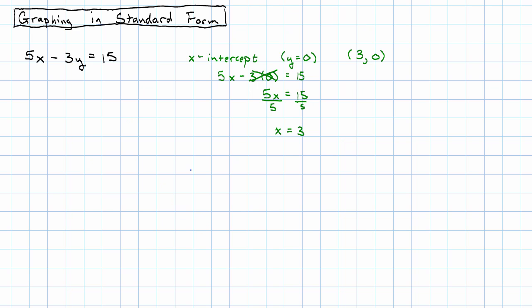The y intercept, that's where x is 0. We plug that in and we get 5 times 0 minus 3y is 15. 5 times 0 is just 0, so we're left with negative 3y is 15. Divide both sides by negative 3 and we'll get y equals negative 5. Our y intercept will be (0, negative 5).